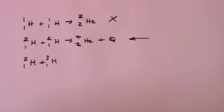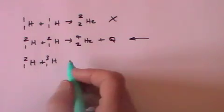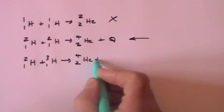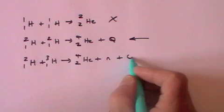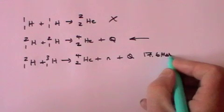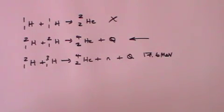That has one proton and two neutrons. And that produces helium plus a neutron, plus energy. Quite a lot of energy, actually. 17.6 MeV for every fusion reaction that takes place. I'll show later on why that is the better approach.